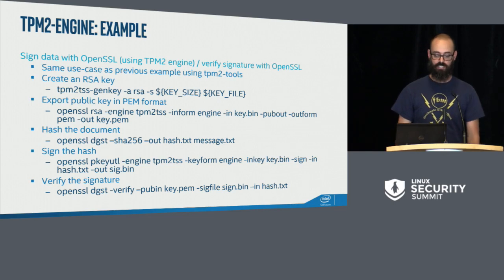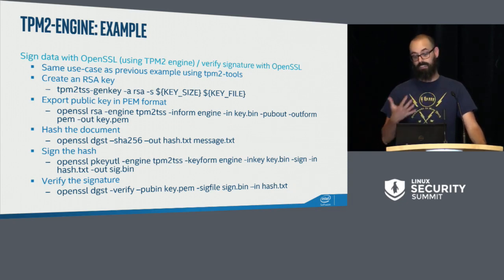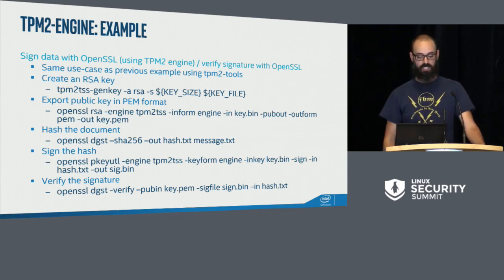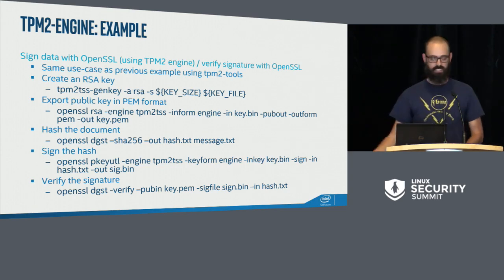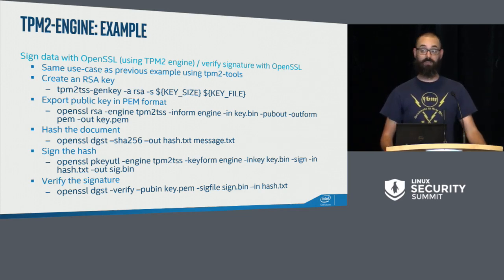An example using the OpenSSL engine: we use a separate utility to create the key, then use the OpenSSL engine to output the public key in PEM format. We then use OpenSSL to hash the document, sign the hash using the engine, and verify the signature with straight OpenSSL. The TPM commands for creating a primary key, creating a subkey, and loading the key all get handled by the OpenSSL engine for you — you don't have to deal with that part of it.